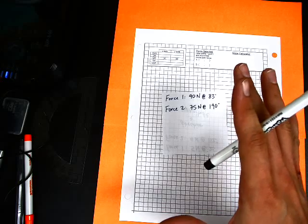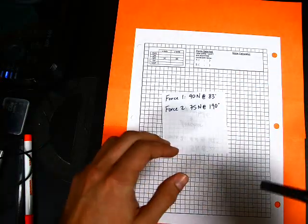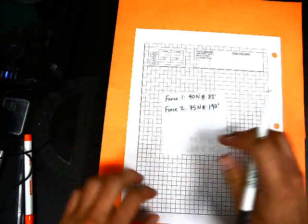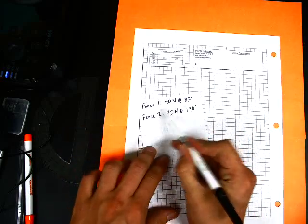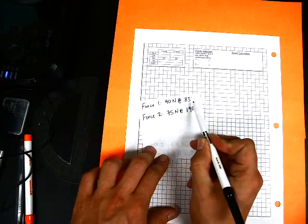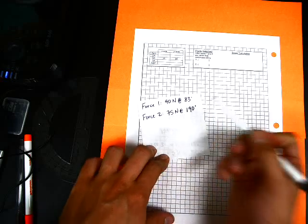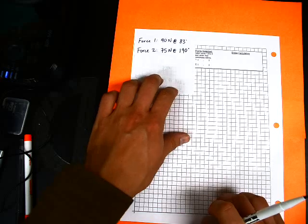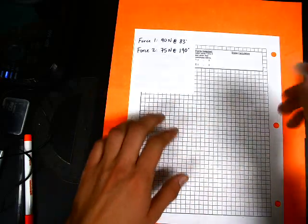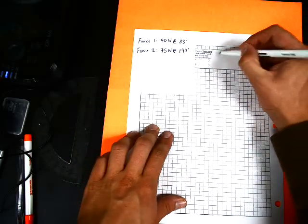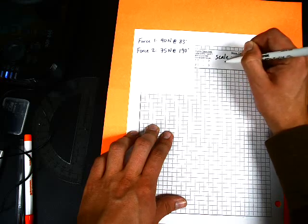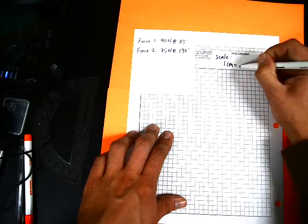Now that you've done the problem, I'm going to go over it real quick so you can check to make sure you did it correctly. Our two forces are 40 newtons at 83 degrees and 75 newtons at 190 degrees. Our first step, which we talked about in the last video, was to determine a scale. How are we going to scale our vectors? One centimeter equals blank newtons.